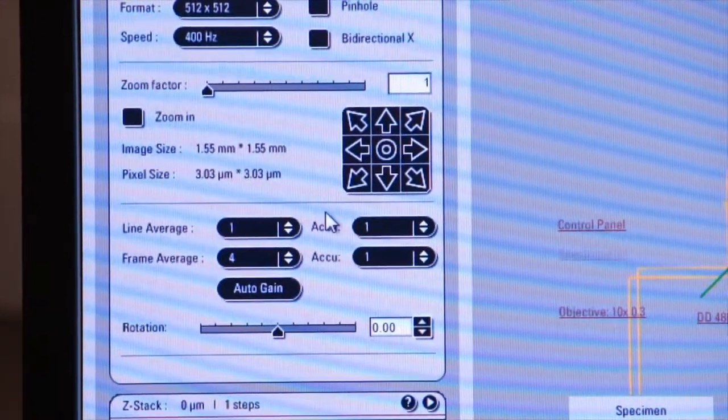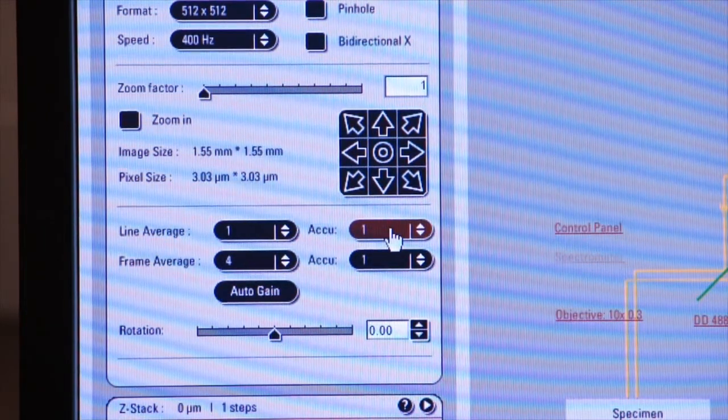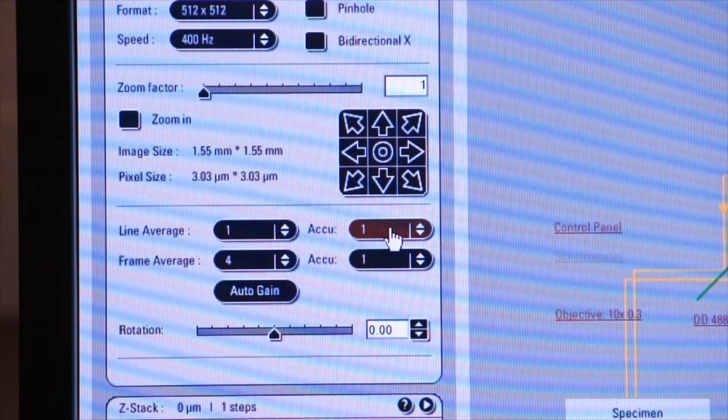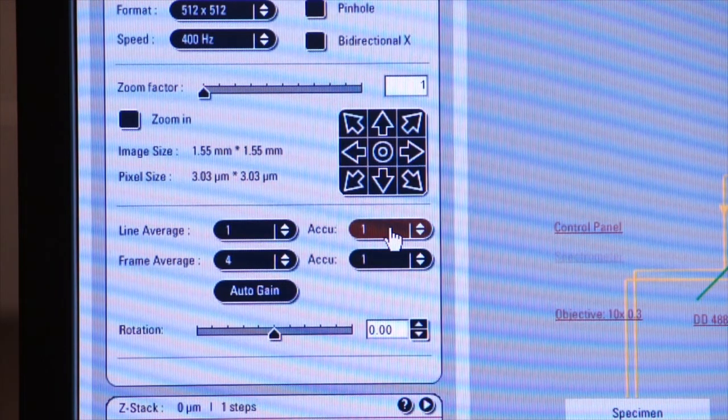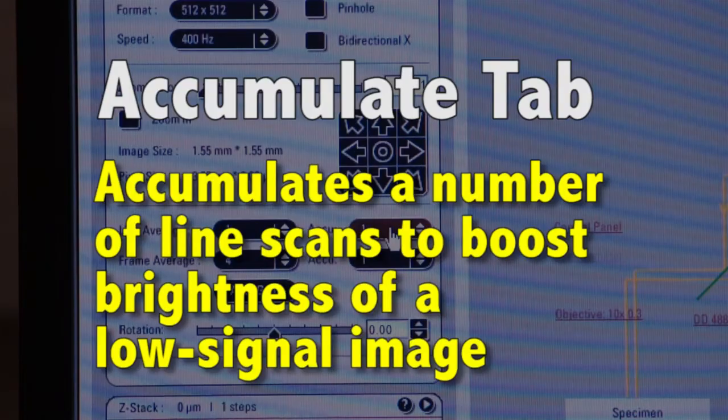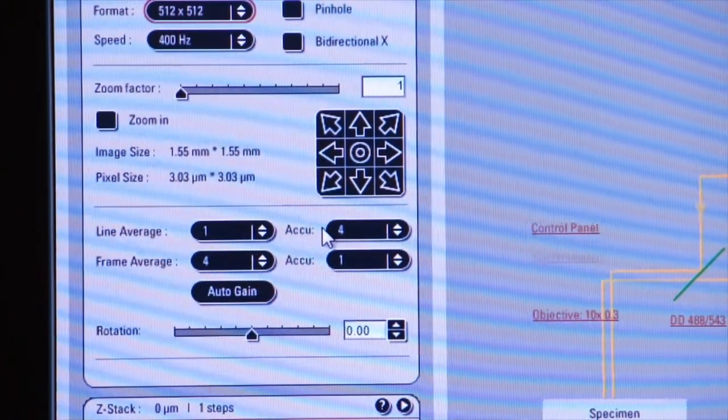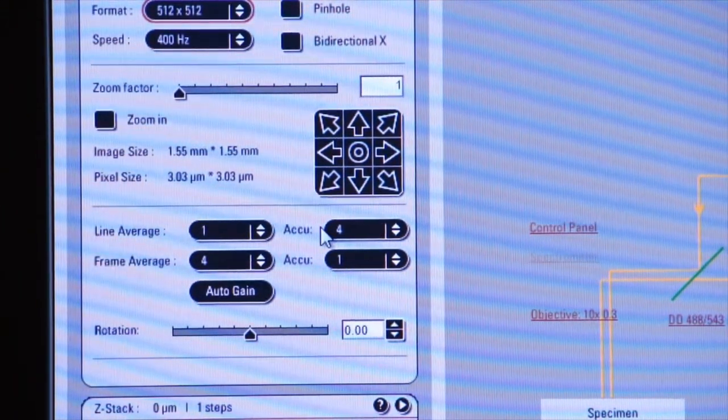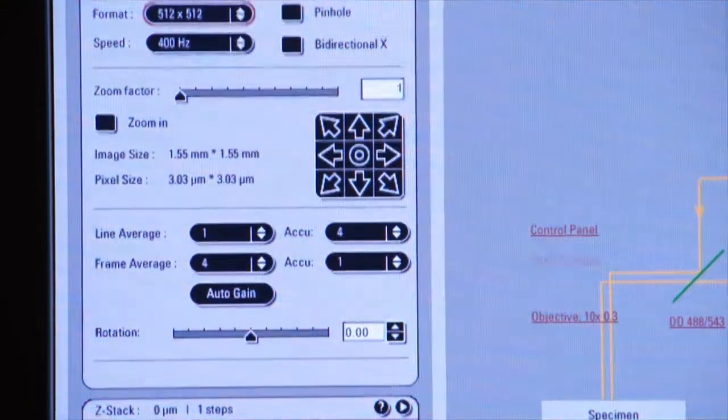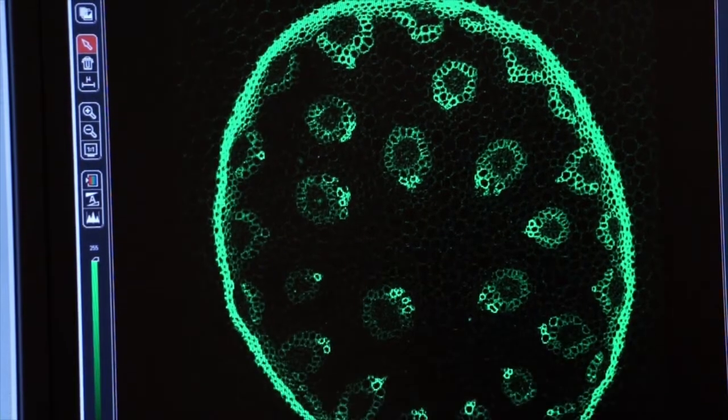Another feature that's useful on the left screen next to line and frame average is the accumulate tab. Accumulate takes an accumulation of each scan if you have a low signal image, and you want to boost the brightness of that image. So here I'll select four, and now I've told the system to do four line scans per line and to accumulate or add together all of those values. Now if I click on capture image, you'll see my image brighten up significantly because it's accumulating each one of those scans together.